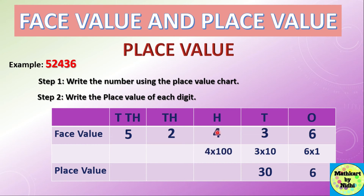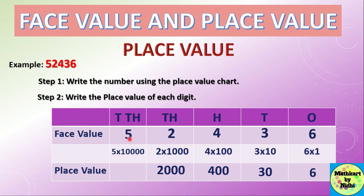The face value is 4 and the place occupied is hundreds, so 4 hundreds = 400. Similarly, 2 × 1000 = 2000 and 5 × 10000 = 50000.